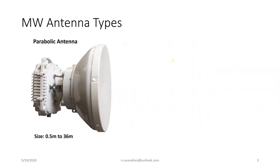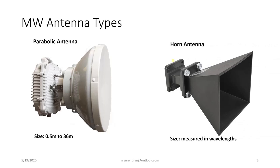Microwave antenna types: predominantly the microwave world uses two different types of antennas — the parabolic antenna and the horn antenna. The parabolic antenna ranges in size from 0.5 meters to 36 meters and covers traditional microwave frequencies of 2 GHz to 38 GHz, as well as V-band, W-band, and E-band. The horn antenna size is measured in wavelengths, with a frequency range from 300 MHz to 30 GHz. Overall, the parabolic antenna is more widely used in microwave communications.